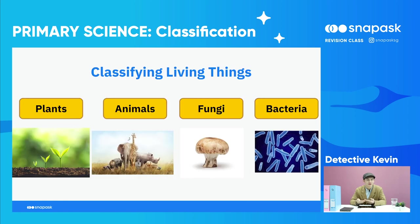So how can we classify living things into different groups, and how can we narrow down our missing person? Living things can be a plant, animals, fungi, or bacteria. And that's the end of our first clue. Stay tuned for the second clue as we piece all the information together.